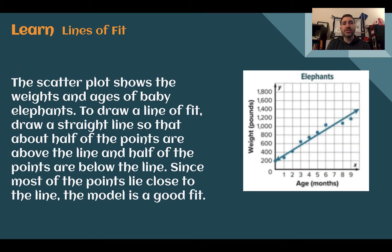This scatter plot shows the weights and ages of baby elephants. To draw a line of fit, draw a straight line so that about half of the points are above the line and half of the points are below the line. Since most of these points lie close to the line, we would say that this model or this line is a good fit for the data.